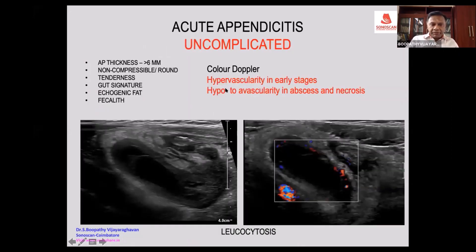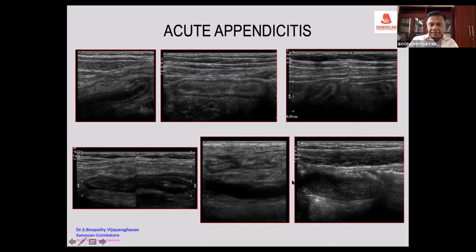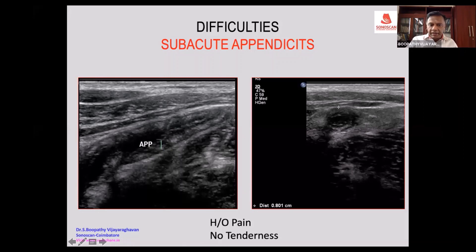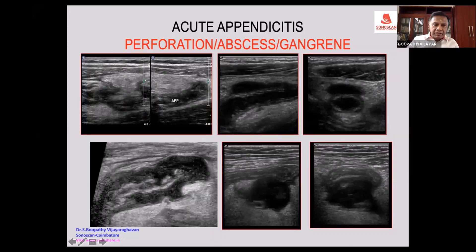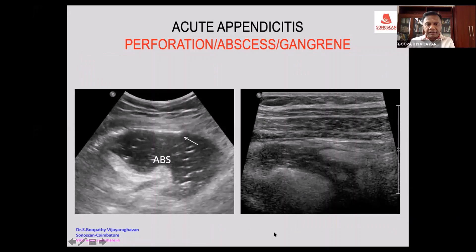The role of color Doppler: when you do color Doppler, the lumen may appear filled with pus. The wall thickening may not be well seen, but the lumen is filled with pus. The AP thickness is 8 millimeters. See the discontinuity in the wall of the appendix. There is also some fluid accumulation anterior to the appendix in cross-section — that represents an abscess.